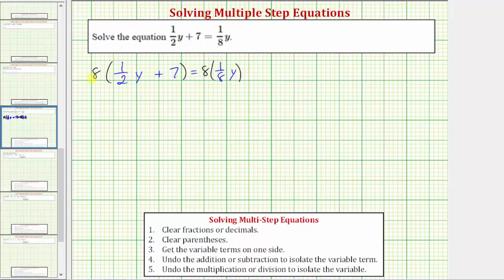On the left, we distribute, and let's go ahead and show each product. We would have 8 × 1½y + 8 × 7 equals on the right, 8 × 1⅛y. For the products involving a fraction, let's write 8 as a fraction with a denominator of 1 here and here, and now let's find each product.